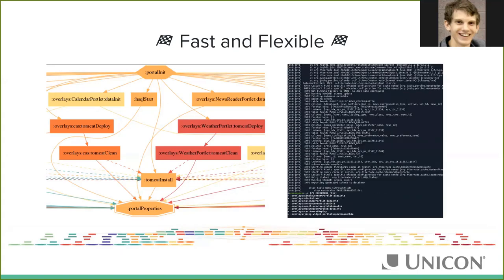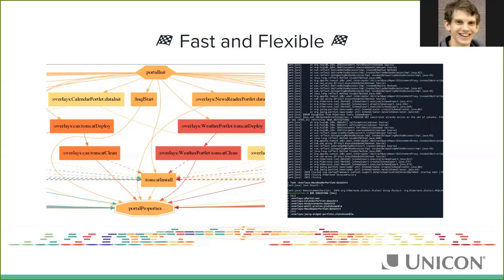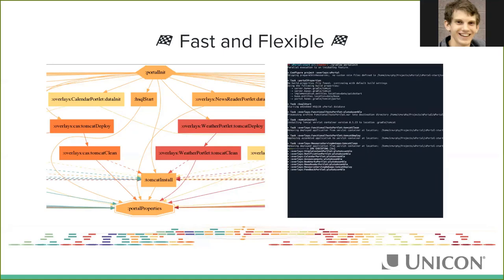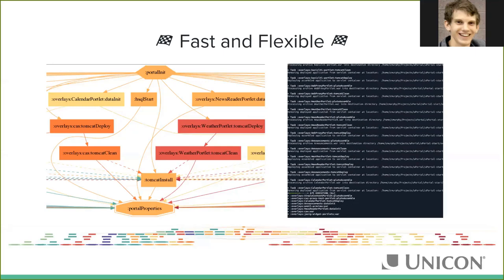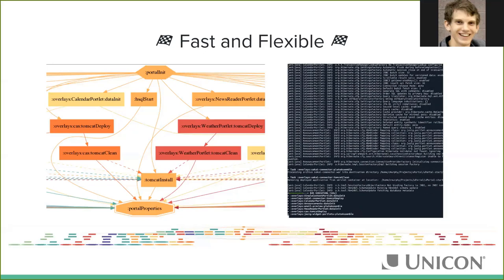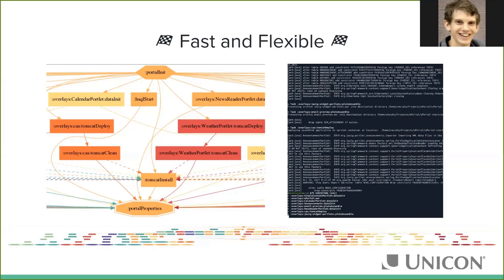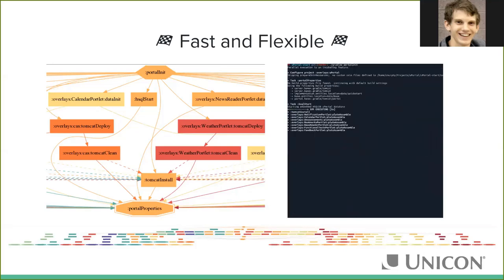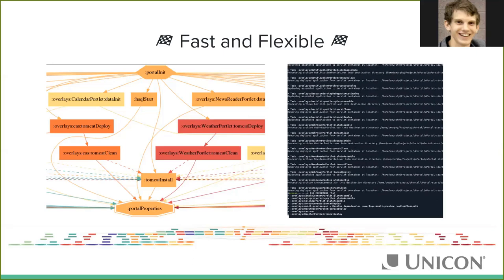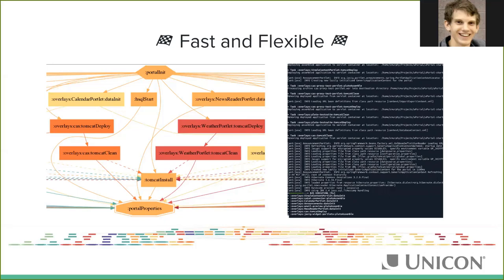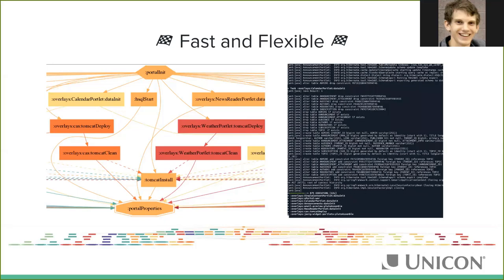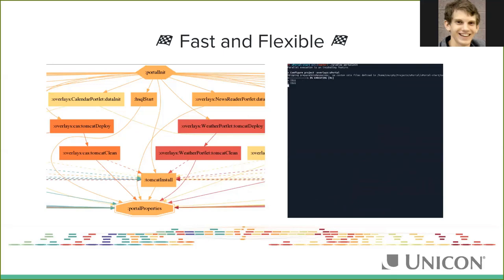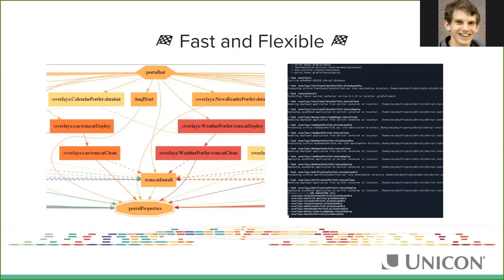Build times in uPortal Start are lightning fast. Most targeted, surgical things can be done on the order of 10 seconds. You also have a lot more control and precision. Many of you will remember that in uPortal 4 and 3, it was largely not possible to deploy one portlet at a time from the bundled portlets. That is no longer the case. It is entirely straightforward to deploy a single module to Tomcat from uPortal Start, whether it's uPortal itself or any of the bundled portlet applications.